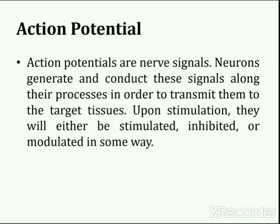Action potential. Action potentials are nerve signals. Neurons generate and conduct these signals along their processes in order to transmit them to the target tissues. Upon stimulation, they will either be stimulated, inhibited or modulated in some way. An action potential is a rapid rise and subsequent fall in voltage or membrane potential across a cellular membrane with a characteristic pattern. Sufficient current is required to initiate a voltage response in a cell membrane. If the current is insufficient to depolarize the membrane to the threshold level, an action potential will not fire. Examples of cells that signal via action potentials are neurons and muscle cells.